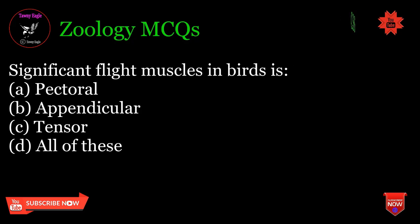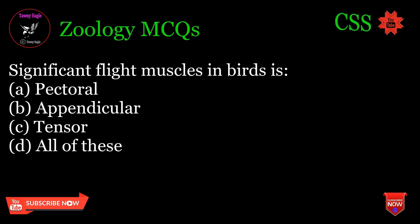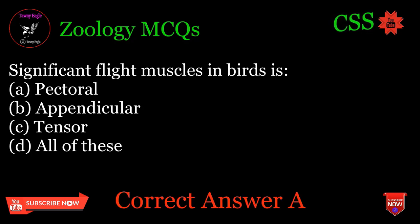Significant flight muscles in birds are: A. Pectoral, B. Appendicular, C. Tensor, D. All of these. Correct answer: A.